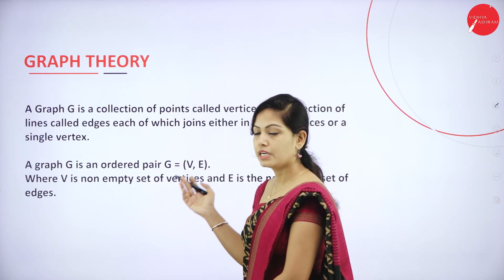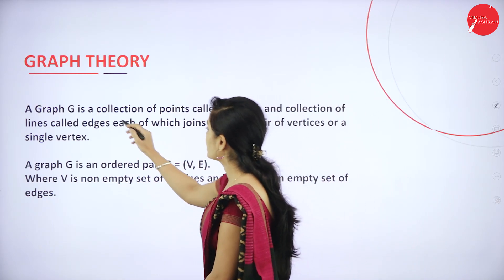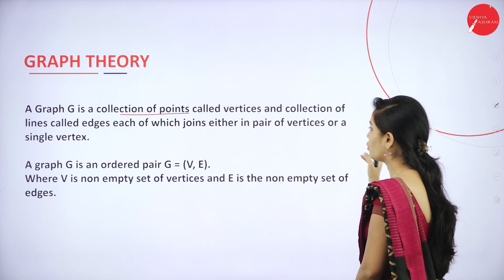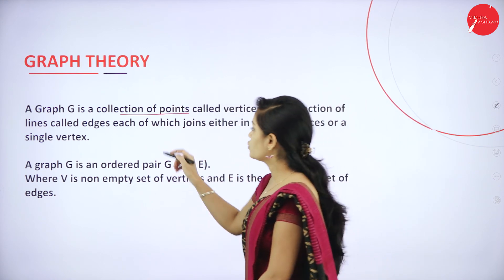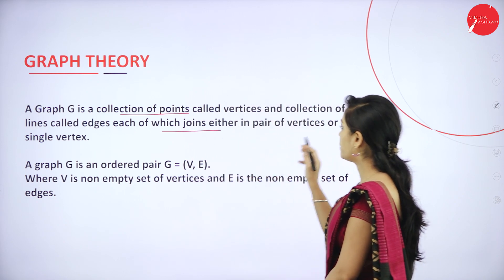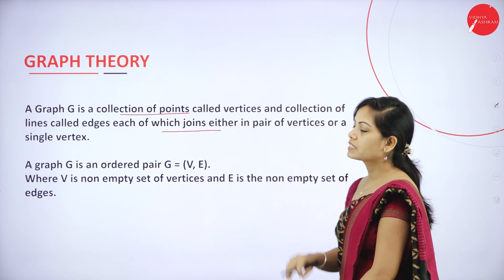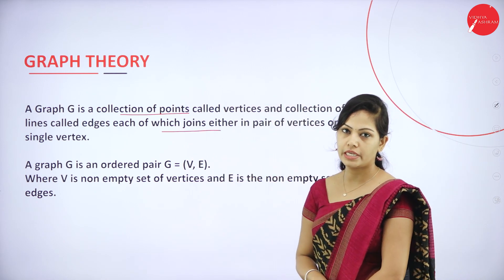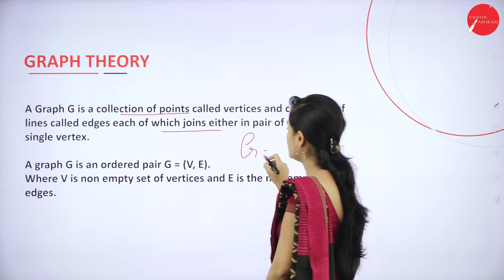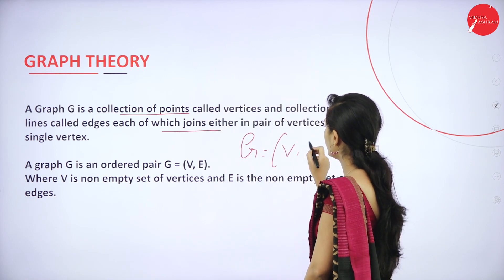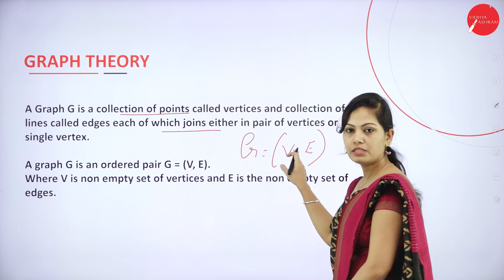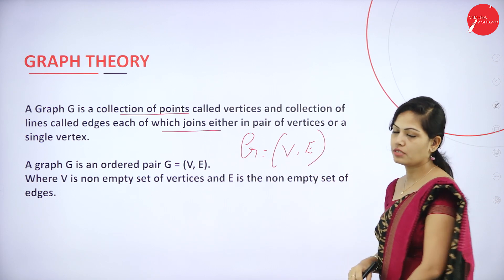So what is a graph? A graph is a collection of points called vertices and a collection of lines called edges, each of which joins either a pair of vertices or a single vertex. A graph can be represented by G equals V, E — where V means vertices and E is edges.